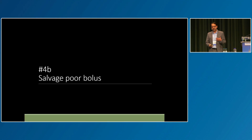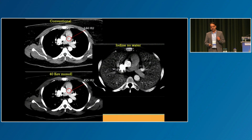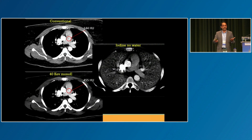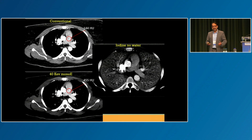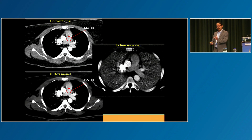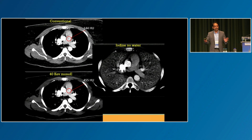The same principle can be used to salvage a poor bolus. Here's a patient with a PE study — it's completely non-diagnostic on the conventional images. But you look at 40 keV, the attenuation of the main pulmonary artery is high. In combination with the iodine map, you can see there is no perfusion defect. This patient does not have a PE. You do not need to repeat the scan — that's a big deal for our patients.